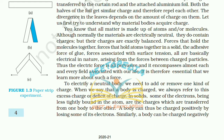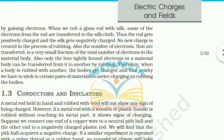To electrify a neutral body we need to add or remove one kind of charge. When we say a body is charged, we always refer to excess or deficit of charge. In solids, some electrons being less tightly bound in an atom are the charges transferred from one body to another. A body can be charged positively by losing some electrons and negatively by gaining some electrons. When we rub a glass rod with silk, some electrons from the rod are transferred to the silk — the rod gets positively charged and the silk gets negatively charged. No new charge is created in the process of rubbing.